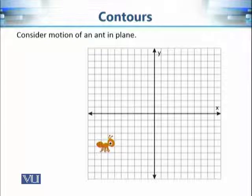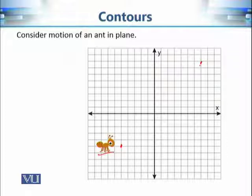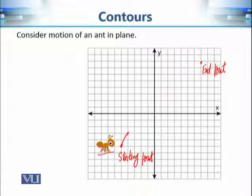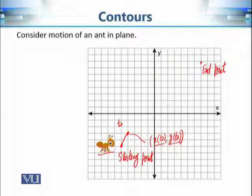Let's begin with a very simple example: the motion of an object in a plane — for example, an ant. If this ant is moving from one point to another and you want to describe its motion in the complex plane, we can record its coordinates after each interval of time. At time t0, it has coordinates x(t0) and y(t0), since x and y depend on time.